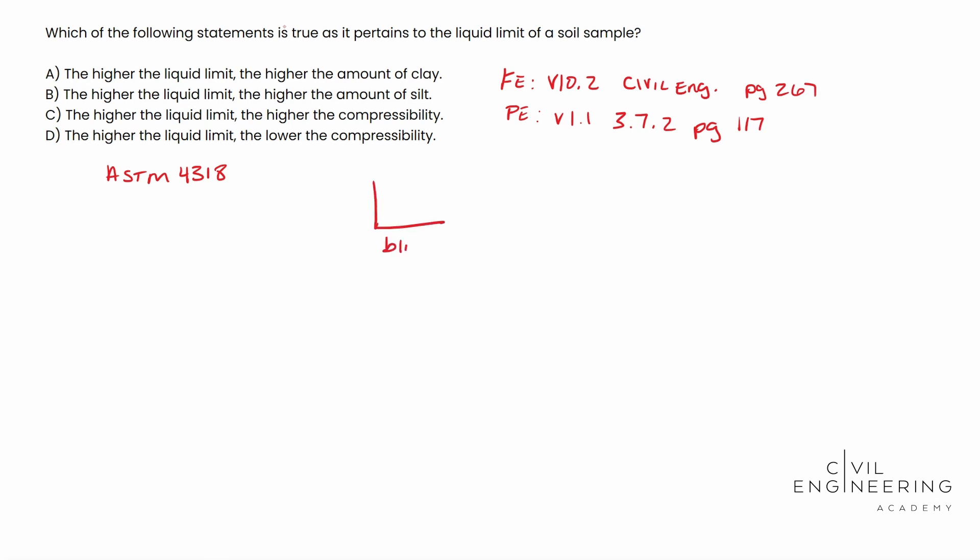You have your blows right here. And then your moisture content is over here. I'm just going to write W percent. And so basically at 25 blows, you want to find where that moisture content is. And that is your liquid limit. That's your LL. Okay. So this has got to be at 25 right here.